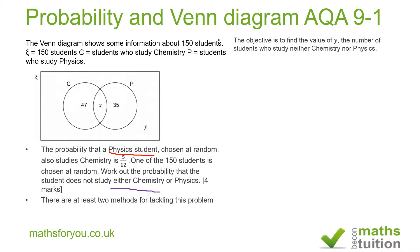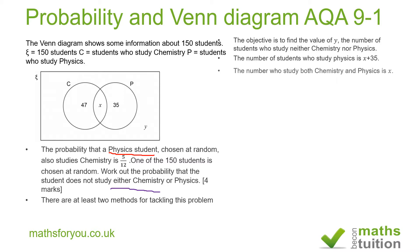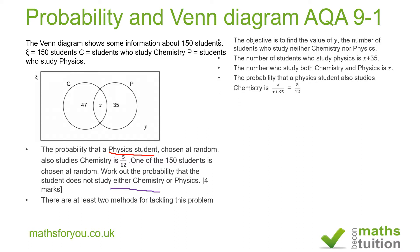Looking at the physics sample space to start with: the number of students who study physics is x plus 35, which includes those who also study chemistry. So the number who study physics is x plus 35, and x of those study both physics and chemistry. The probability will be x divided by x plus 35, which is equal to 5 over 12 as given to us.